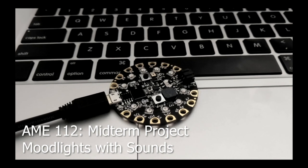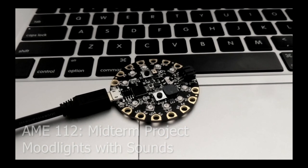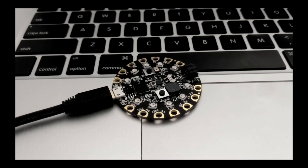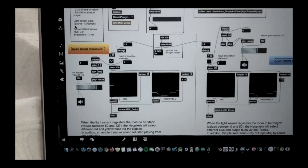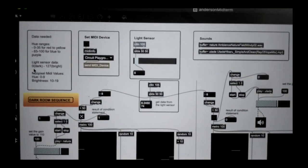My project for the midterm is using the Adafruit Circuit Playground Express to make a mood light that plays sounds. By using data from the light sensor on the board I can control what type of mood light sequence and sound to play.